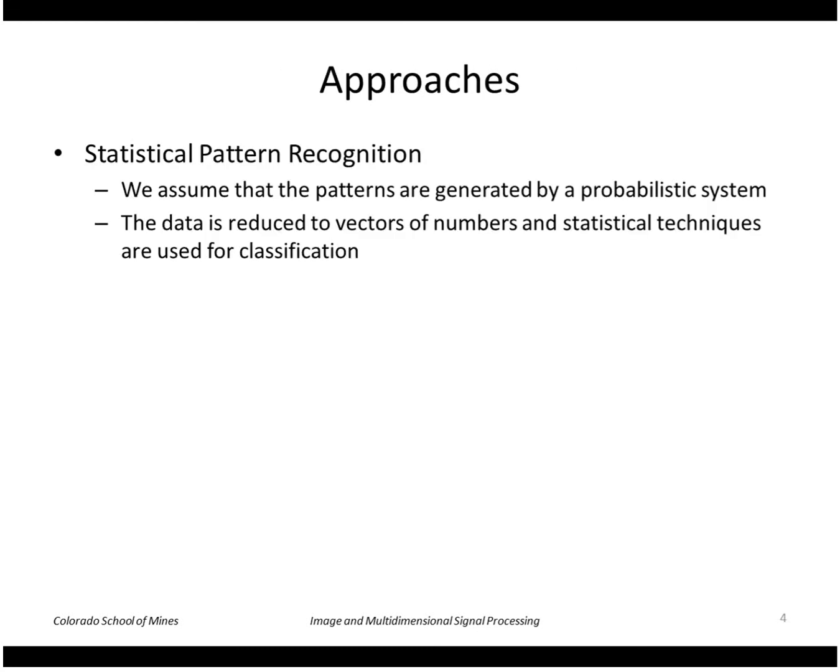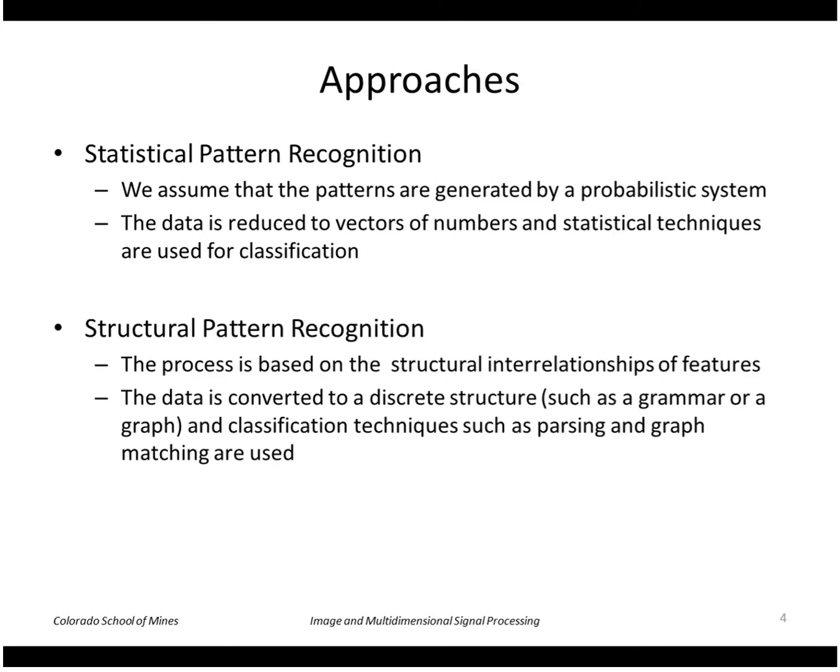There are several approaches we can use for pattern recognition. One is statistical, where we assume that the patterns are generated by a probabilistic system; the data is reduced to vectors of numbers and statistical techniques are used for classification. Another general approach is called structural, where we have data that can be converted to a discrete structure such as a grammar or a graph. An example might be representing the three-dimensional shape of a person in terms of arms, legs, head, torso, and their relative relationships as links in a graph.